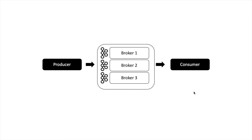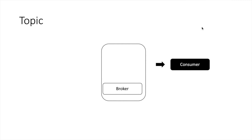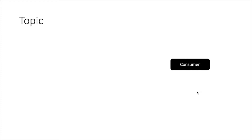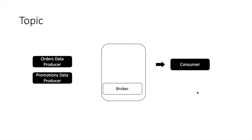Now let us move to our next point: topic. A consumer application wants to read data and makes a request to Kafka. The consumer has to tell Kafka which data exactly it is interested in reading. Because there are multiple producers sending data to Kafka — there is orders data, promotions data, and there may be other applications sending data to the broker. So the consumer has to tell the broker clearly which data it wants. This problem is solved by creating topics.